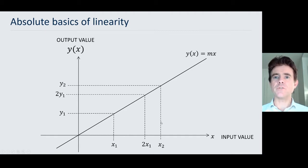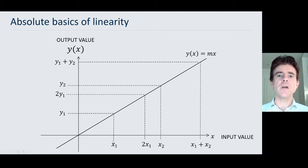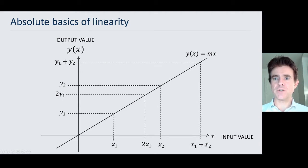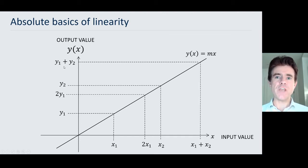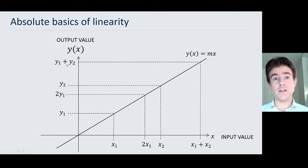If we put in a different value, say x2, into the linear equation, we get y equals mx2, which we label as y2. The point of linearity — and this begins to introduce the principle of superposition — is that if we introduce to this mapping both x1 and x2 added together, and put that through the linear equation, then the output we obtain is the sum of the outputs obtained when we put in x1 and x2 separately. So x1 and x2 gave us y1 and y2, and when we put both inputs in together, we get the sum of the respective outputs.